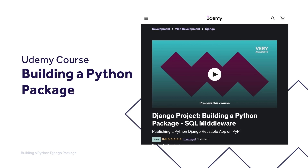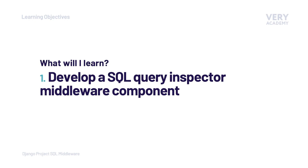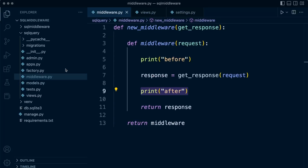We are now ready to develop our SQL query inspector middleware component. We'll use the code we previously created in the last section of this course, but we'll add some additional useful features — not only returning the SQL queries, but also capturing any duplicate queries generated from the view. Duplicate queries tell us we need to review the SQL code and potentially make changes.